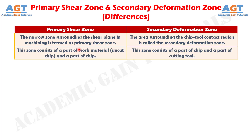Number 2: The primary shear zone consists of a part of work material or uncut chip and a part of chip, whereas the secondary deformation zone consists of a part of chip and a part of cutting tool.